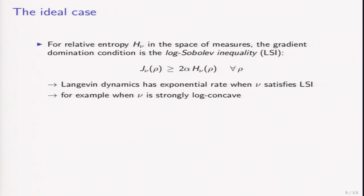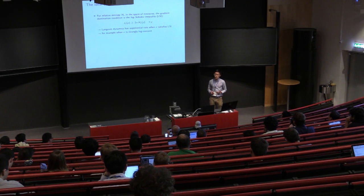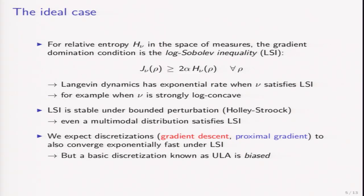For the relative entropy objective function, the gradient domination condition is what's called the log-Sobolev inequality, which is this bound between the Fisher information and relative entropy. In the ideal setting, the Langevin dynamics works for sampling and has exponential rates when the target measure satisfies the log-Sobolev inequality, for example when the target measure is strongly log-concave. What's nice is that log-Sobolev inequality is stable under bounded perturbation, so even a multimodal distribution satisfies log-Sobolev inequality, and therefore the Langevin dynamics converges exponentially fast there.